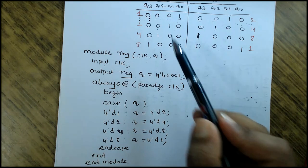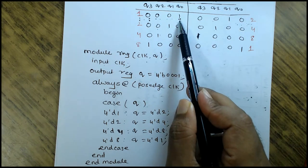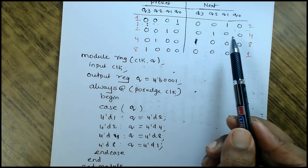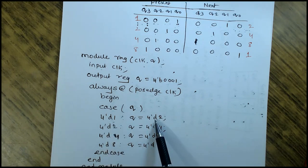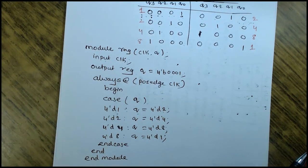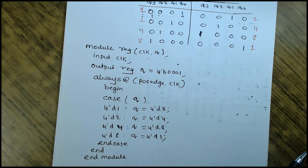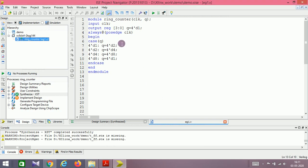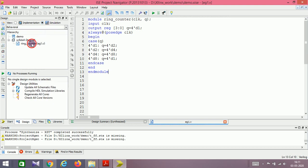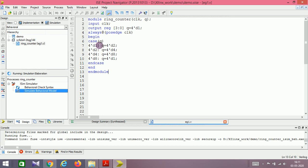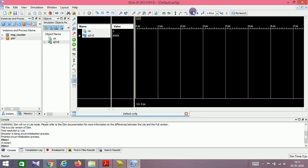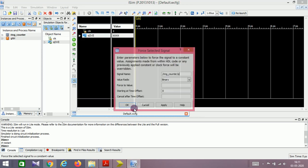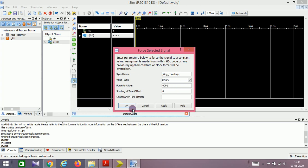You can see it is left shifting — one, two, four, eight — it is left shifting. You can try the same approach for a right shift ring counter: after 1 it should go to 8 once right shifted, after 8 it should go to 4, and so on. Take it as an assignment and try to execute it in Xilinx. I have taken the same ring counter code in the Xilinx environment, synthesized it — let me simulate it and check its functionality. This is a left shift ring counter.